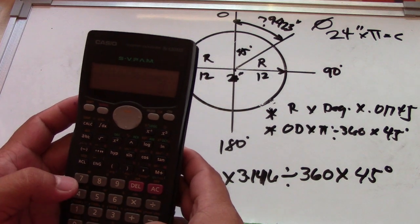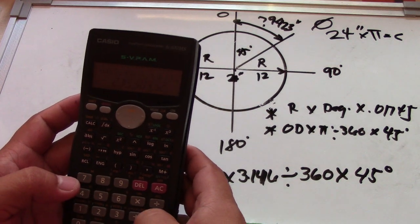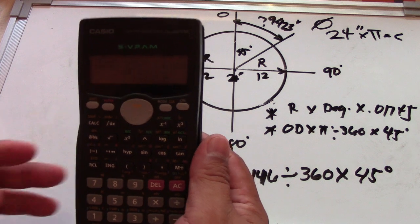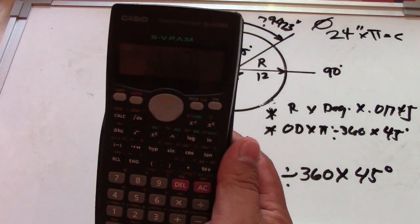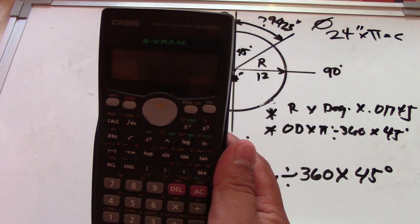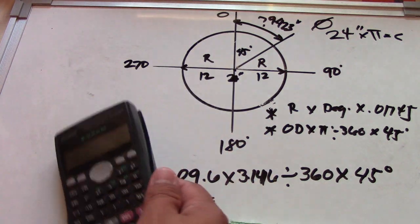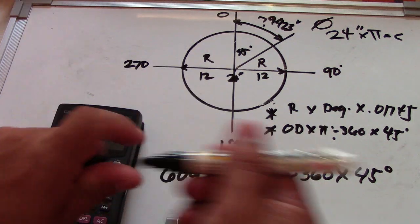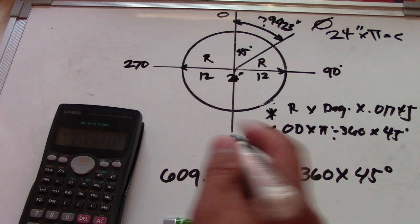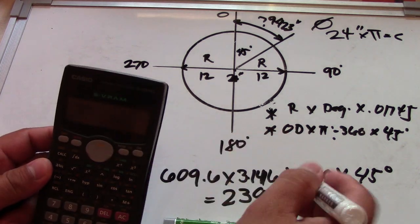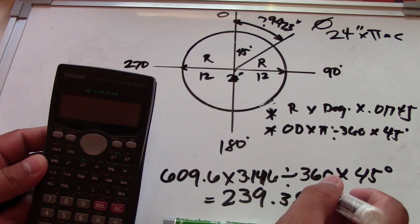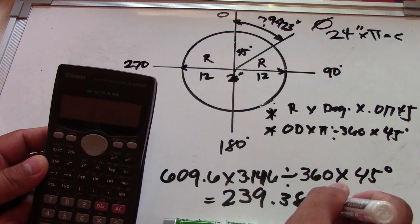So computing: 609.6 multiplied by 3.1416, divided by 360, times 45. The answer is 239.38 mm. So the arc length from Formula 2 is 239.38 millimeters.